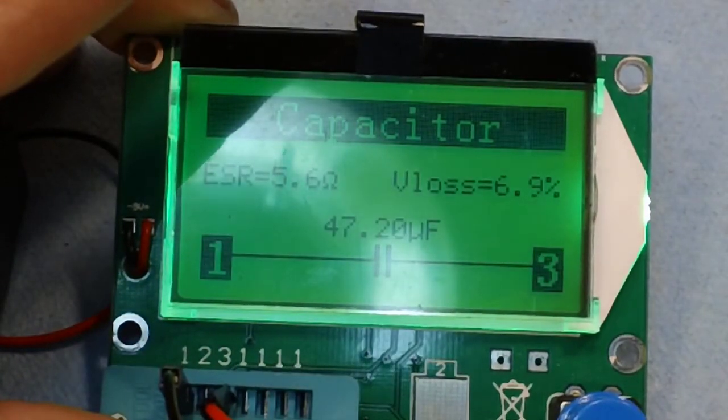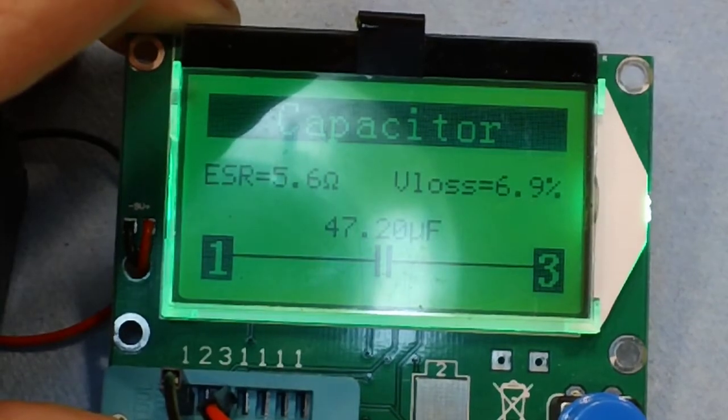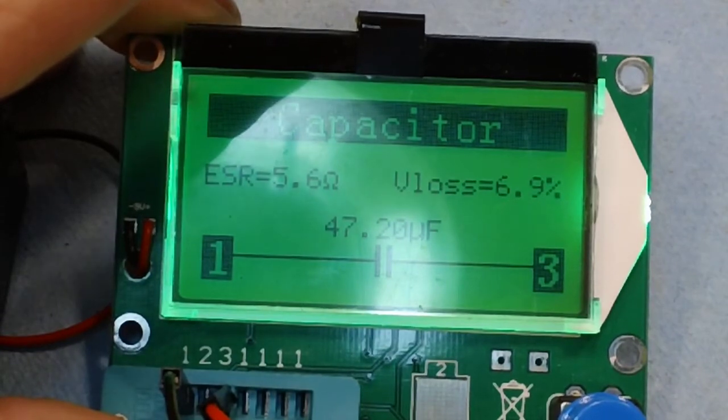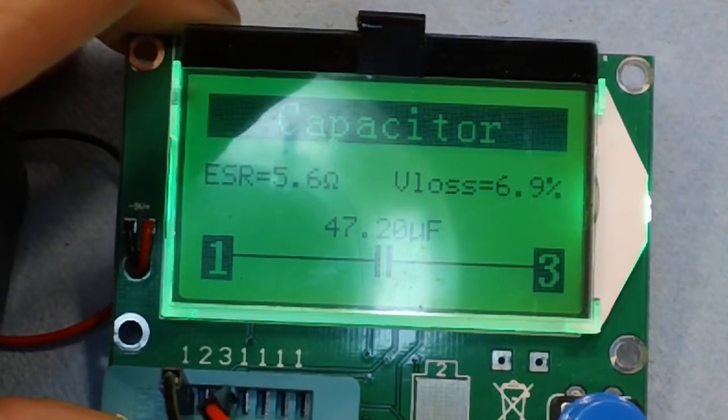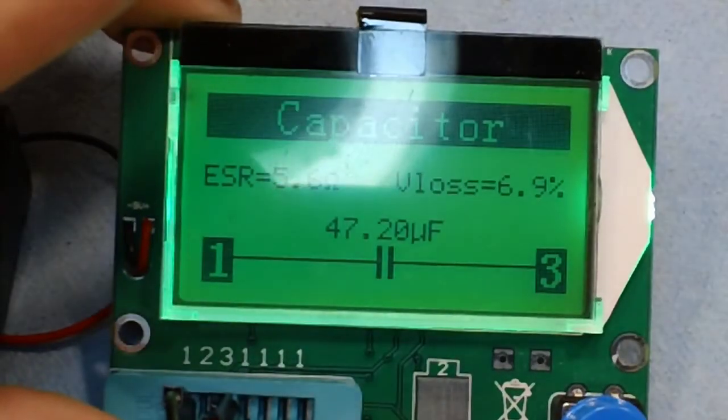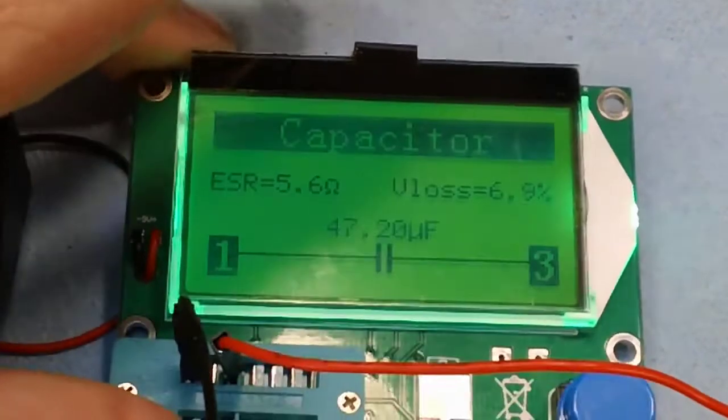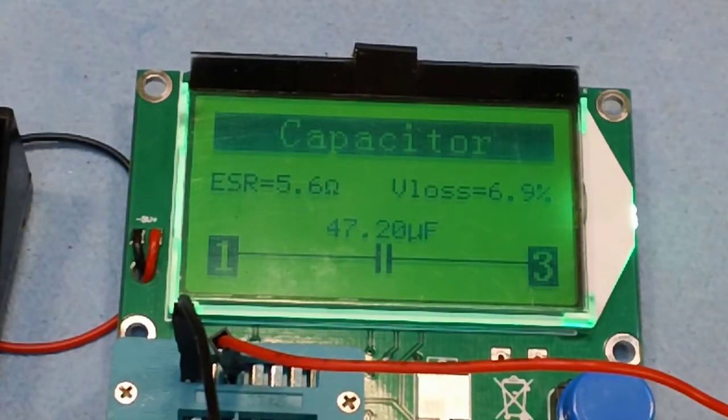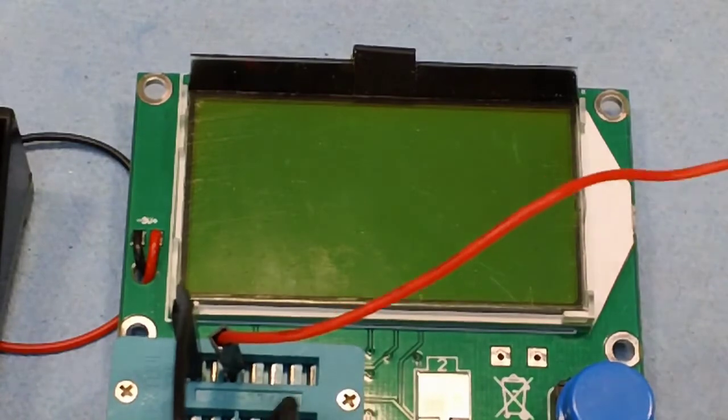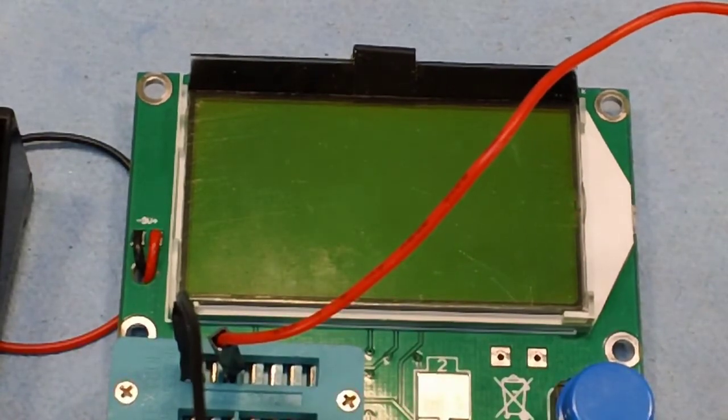Alright, well. ESR 5.6. See, that's kind of high. 47.2 microfarad. This is a 10 microfarad. V loss is 6.9%. I'm going to say that's a bad cap. Not only because it's way, way out of range, but the ESR is so high and I just think it's not a good one. So, I don't know that that's got anything to do with what we're doing, but we're going to, like I said, replace it.